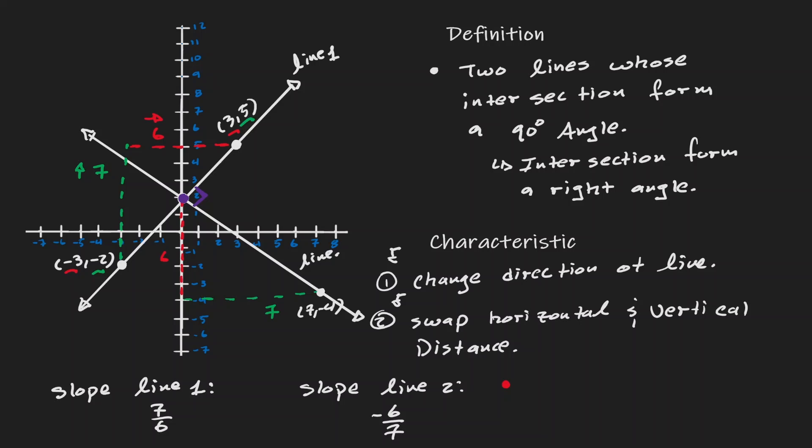So we can define perpendicular lines as lines who have a negative reciprocal slope.